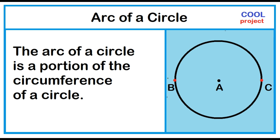Two distinct points on a circle divide the circle into two parts called arcs. When the endpoints of the arcs are also endpoints of a diameter, each arc is a semicircle.